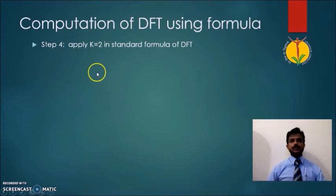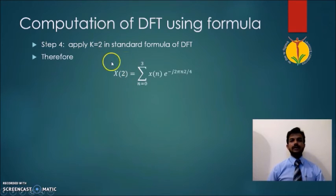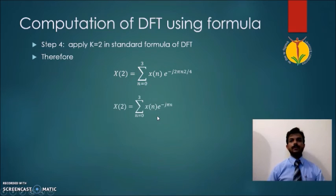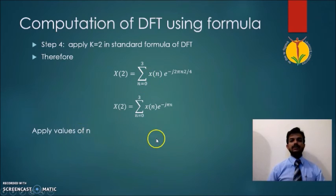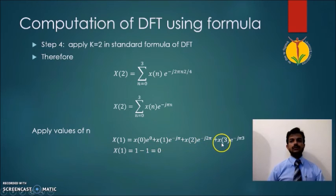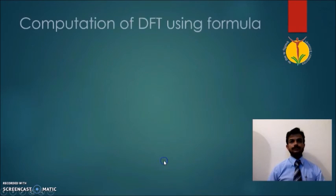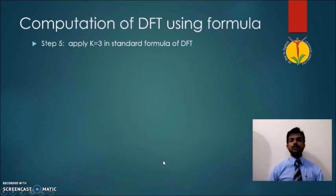Following the same steps for k=2: the standard DFT equation reduces accordingly. After simplifying and applying the values X(0)=1, X(1)=0, X(2)=0, X(3)=1, we get X(2) = 0.